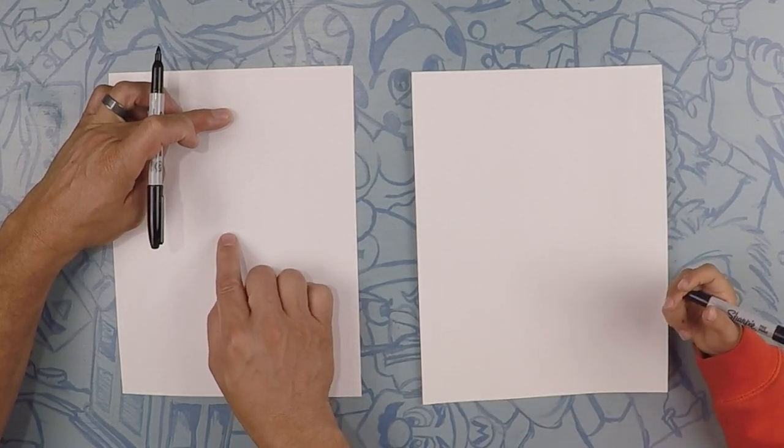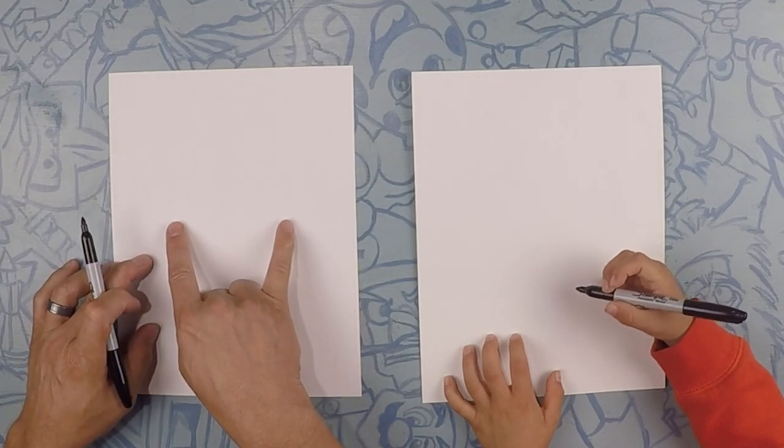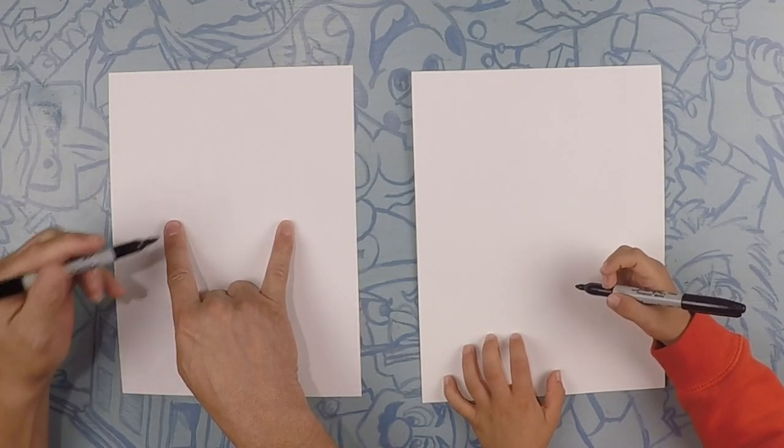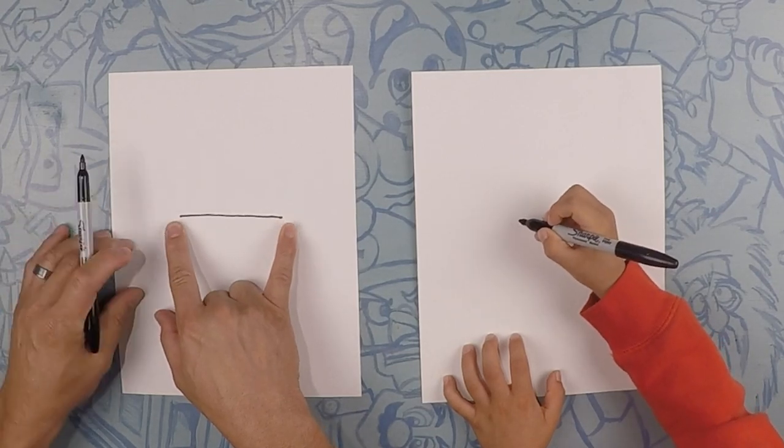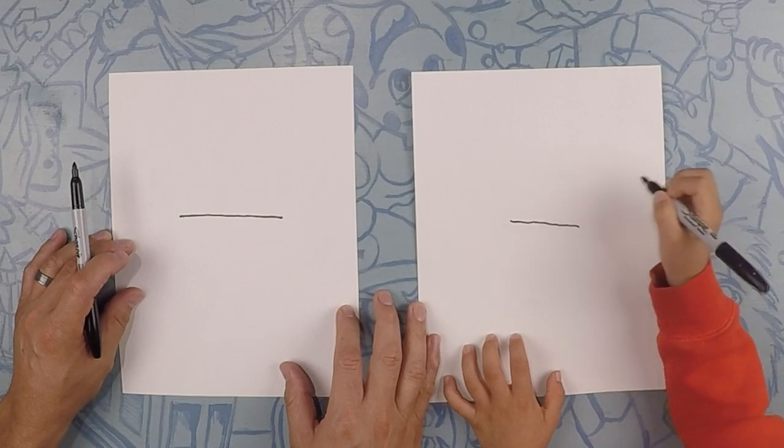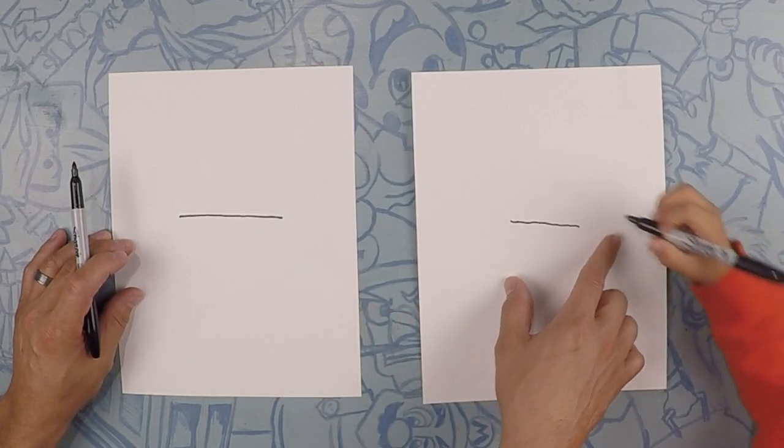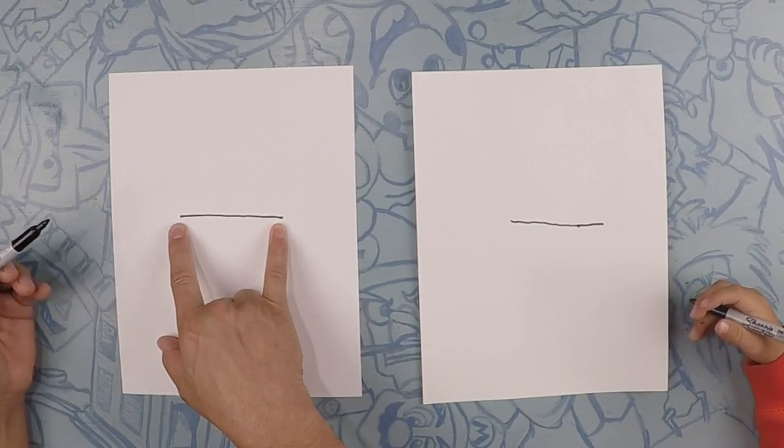So what we're gonna do is we're gonna go about halfway up the paper, about right in the middle, and we're gonna draw a line maybe about this wide. It doesn't have to be just like that, about that wide. Yep straight across, a little bit longer. Perfect. So this is gonna be Frankenstein's forehead.